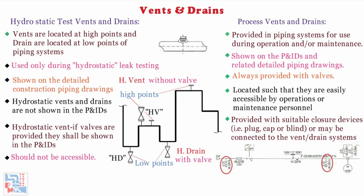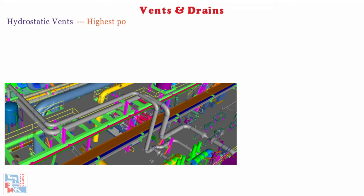Now let's talk about the considerations while providing hydrostatic vents and drains on piping systems. Hydrostatic vents shall be provided at all the highest points of the piping system. The hydrostatic drains shall be provided at the lowest points of the piping system.